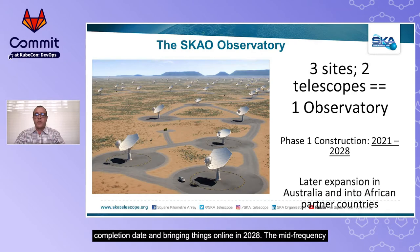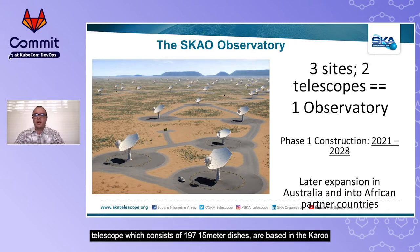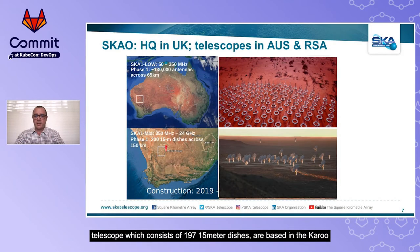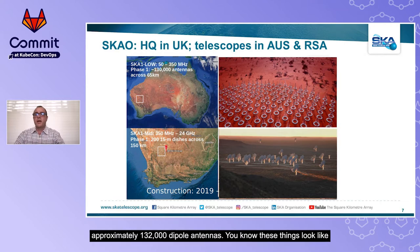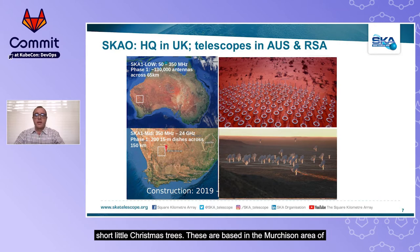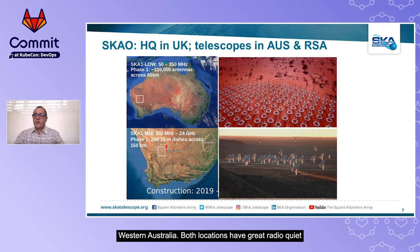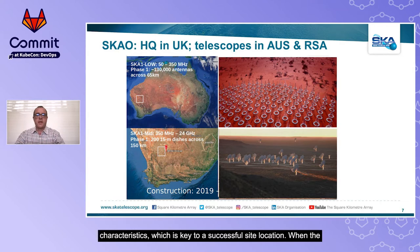The mid-frequency telescope consists of 197 15-metre dishes based in the Karoo Desert in South Africa. The low-frequency telescope uses approximately 132,000 dipole antennas — these things look like short little Christmas trees — and are based in the Murchison area of Western Australia. Both locations have great radio quiet characteristics, which is key to a successful site location.